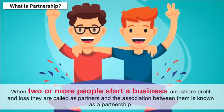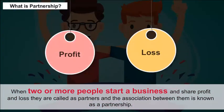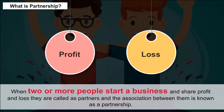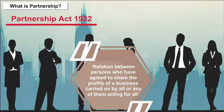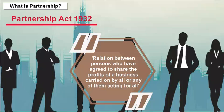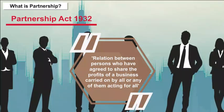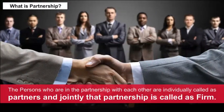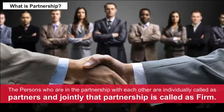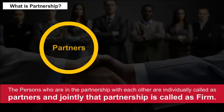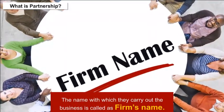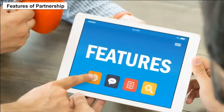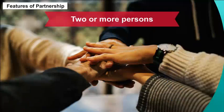Nature of Partnership: When two or more people start a business and share profit and loss, they are called as partners and the association between them is known as a partnership. The Partnership Act 1932 defines partnership as the relation between persons who have agreed to share the profits of a business carried on by all or any of them acting for all. The persons in the partnership are individually called partners, and jointly that partnership is called as a firm.